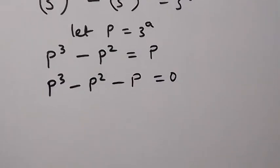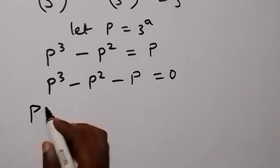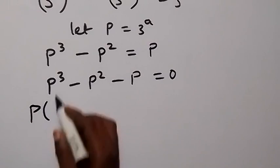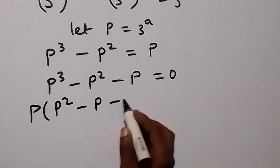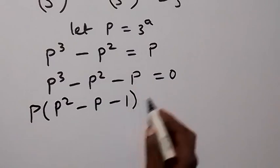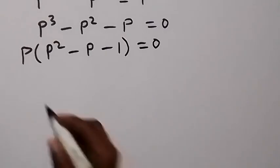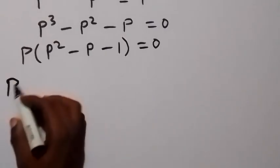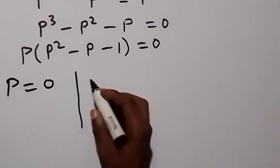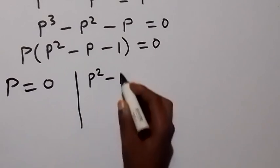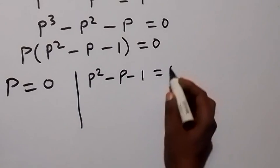From here we can solve this — we have p common, so we factor p out and we have p left times the quantity p squared minus p minus 1, equals 0. So here we have p equals 0, or p squared minus p minus 1 equals 0.